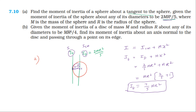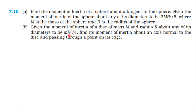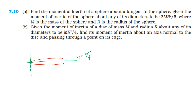For the second problem, the moment of inertia about a diameter of the disk is mr²/4. We need to find the moment of inertia about an axis passing through the edge and normal to the plane of the disk. We will use both the perpendicular axis theorem and the parallel axis theorem.